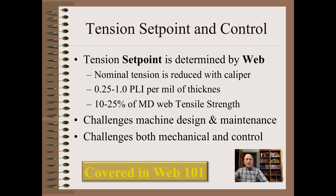Lighter and thinner webs may want to be run at lower tensions. However, this can challenge machine design and maintenance. This includes mechanicals such as rollers, and includes every single aspect of a tension control system. These were covered in great detail in our Web 101 class and elsewhere and will not be repeated here.